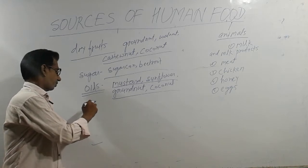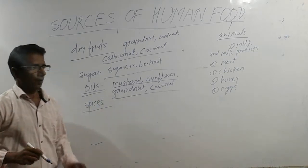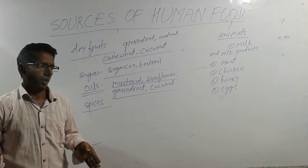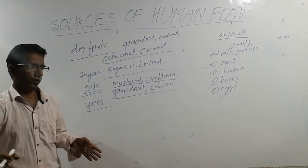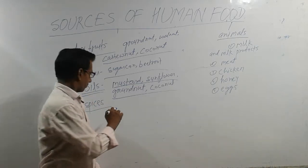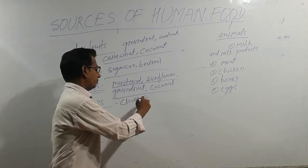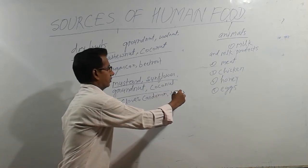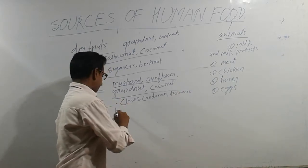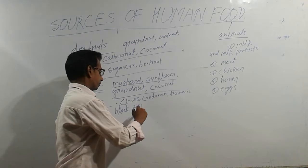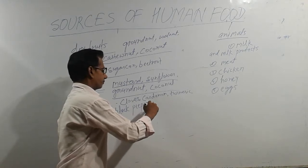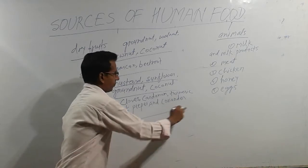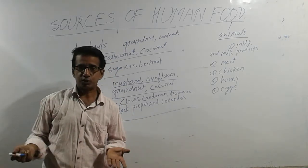Spices are those food items that make our food tasty. The main spices that we use in our kitchen are cloves, cardamom, turmeric, black pepper, and coriander. These are the main spices that we use in our kitchen.